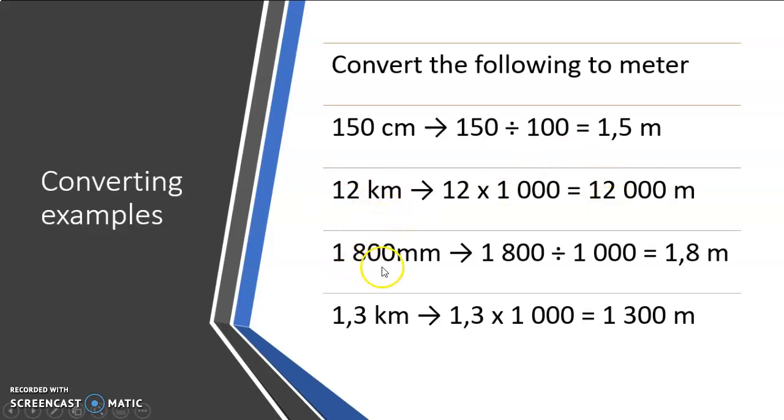When I have 1800 millimeters and I want to go to meters, I'm going from a small measuring unit to a bigger one. Therefore, I divide and I divide with a thousand since there's a thousand millimeters in a meter. Once again, I can move my imaginary comma three spaces since there are three zeros in a thousand. If I move it one, two, three, and there's my answer: one comma eight meters.